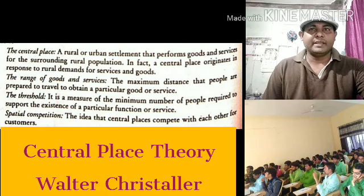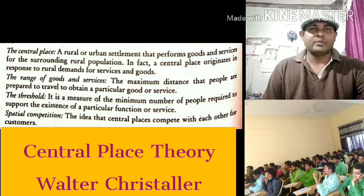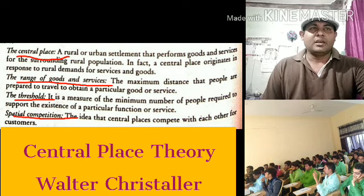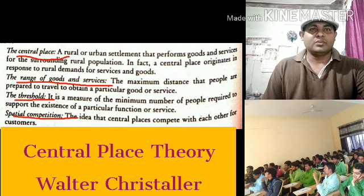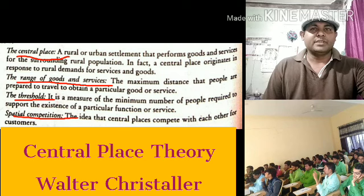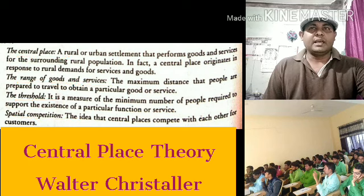The four key concepts are: the central place, the range of goods and services, the threshold, and spatial competition. First, the central place is a rural or urban settlement that provides goods and services for the surrounding rural population. A central place originates in response to rural demand for services and goods. Second, the range of goods and service is the maximum distance that people are prepared to travel to obtain a particular good or service. Third, the threshold is the minimum number of people required to support the existence of a particular function or service. Fourth, spatial competition refers to the idea that central places compete with each other for customers.